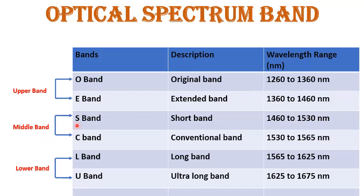The middle band consists of S band and C band. S stands for short band and C stands for conventional band — also known as the erbium window. These middle bands are most widely used in optical fiber communication. The wavelength range is 1460 nm to 1530 nm for S band and 1530 nm to 1565 nm for C band. These bands have low attenuation losses but some dispersion losses, so a dispersion compensation device is used when using C band or S band.